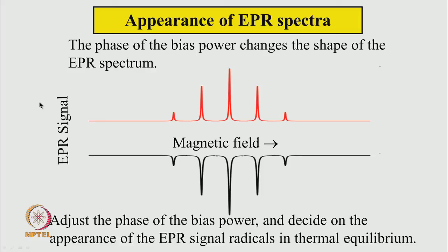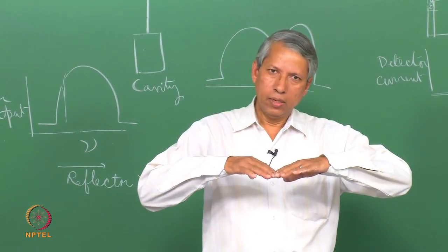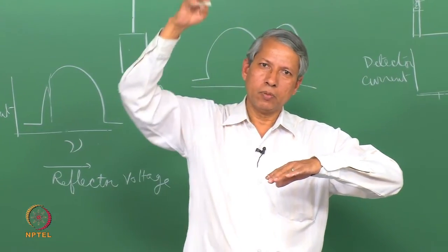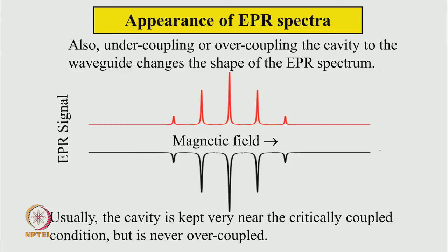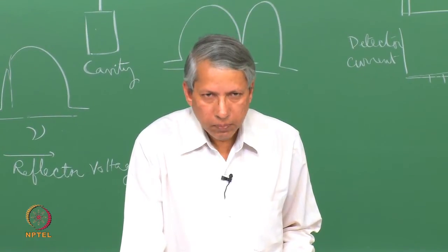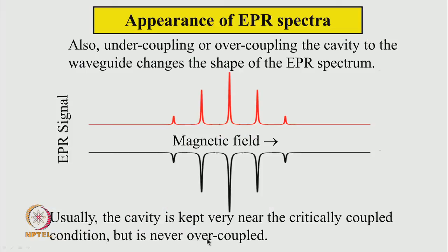We have to adjust the bias power and decide what set of signal we want to record and display. We are often dealing with a signal from a radical which is in thermal equilibrium. In thermal equilibrium, the lower level has slightly more population than the higher level, so we get an absorptive signal. Whether a particular shape is called absorptive representation — that has to be decided once and for all. The appearance will depend on the phase of the bias power, but it will also depend on the cavity matching — under coupling or over coupling will also change the phase of the power coming out from the cavity. In practice, we never work in the over coupled condition; we work just a little bit less than the critical coupled condition.